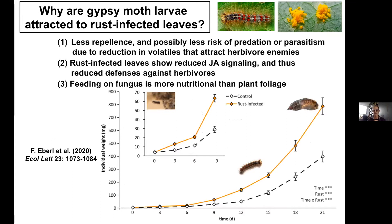Another reason the caterpillars go to rust-infected plants may be nutritional: Franzi showed that caterpillars did much better when they had fungus in their diet — they gained significantly more weight and had higher survival. She showed this was due to increased nitrogen and amino acids in their diet, and also identified some attractive cues for feeding stimulation. When a pathogen is brought into a plant-herbivore system, it really changes the dynamics completely.